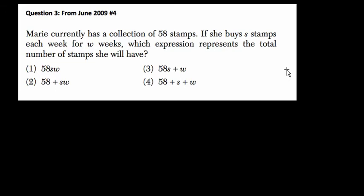Maria currently has a collection of 58 stamps. If she buys S stamps each week for the next W weeks, which expression represents the total number of stamps she will have? Now, from the first two sentences, we know that she's starting with 58 stamps and she's adding more to them. So we know that it can't be one because one deals purely with multiplication.